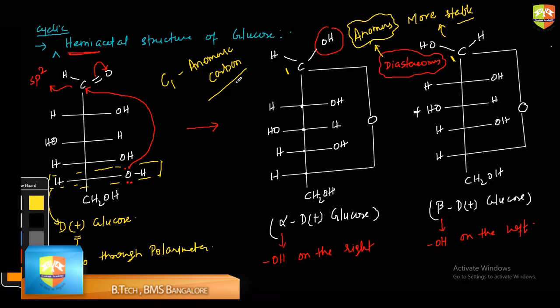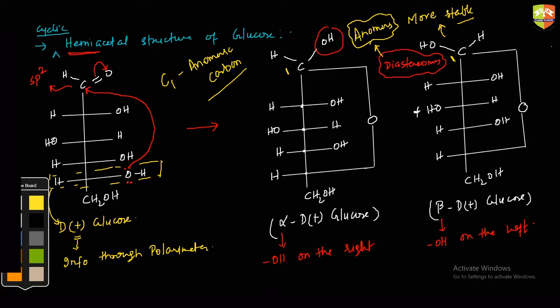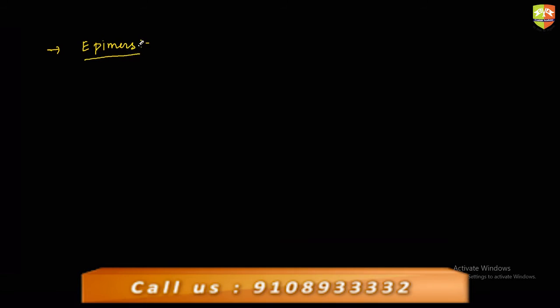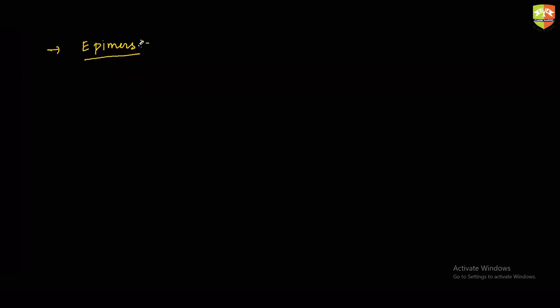We'll discuss epimers here. Epimers are those carbohydrates which differ in configuration only at one carbon, other than anomeric carbon. Those carbohydrates which differ in configuration only at one carbon, other than anomeric carbon, are called epimers.